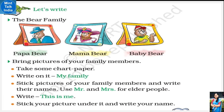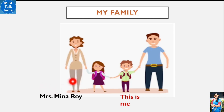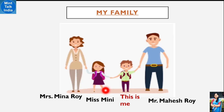Now let's write about our family. Family mein kaun kaun hota hai? Hamare papa hote hain, mummy hoti hain, hum hote hain, hamare chote bhai behen hote hain, aur kabhi kabhi hamare dada dadi bhi hote hain. Aapko ek aisa chart banana hai jiske upar heading likhni hai 'My Family'. Uske neeche aapke parivaar ki photograph lagani hai. Aapke photo ke neeche likhna hai 'This is me'. Mummy ke naam ke neeche likhna hai 'Mrs.' aapki mummy ka naam. Papa ke photo ke neeche likhna hai 'Mr.' aapke papa ka naam. Boys hote hain, unke naam ke saamne hum 'Mr.' likhte hain - jiska M capital hota hai.